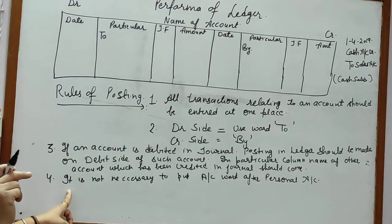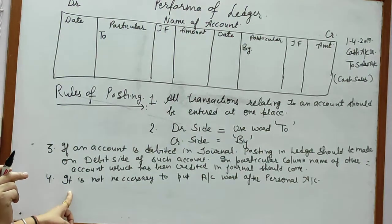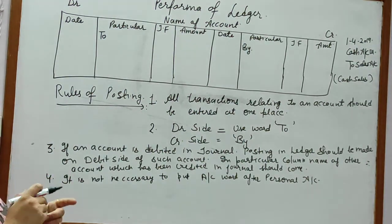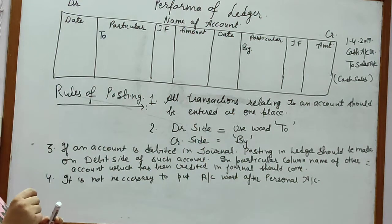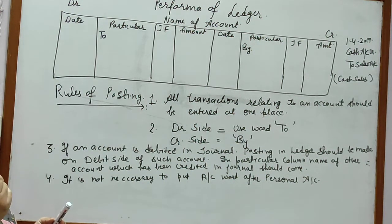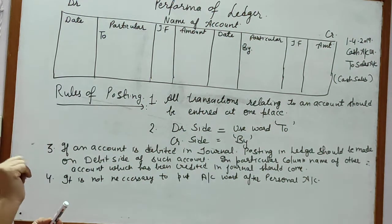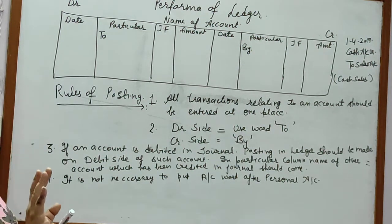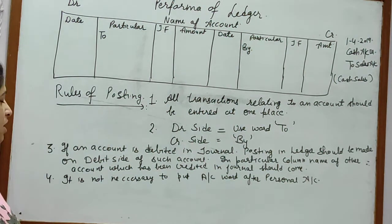It is not necessary to put the word 'account' after a personal account. For example, just write 'Mohan', not 'Mohan Account'. It is not necessary to add the word 'account' after a personal account. If you want to write it, attach it as discussed earlier in the journal.